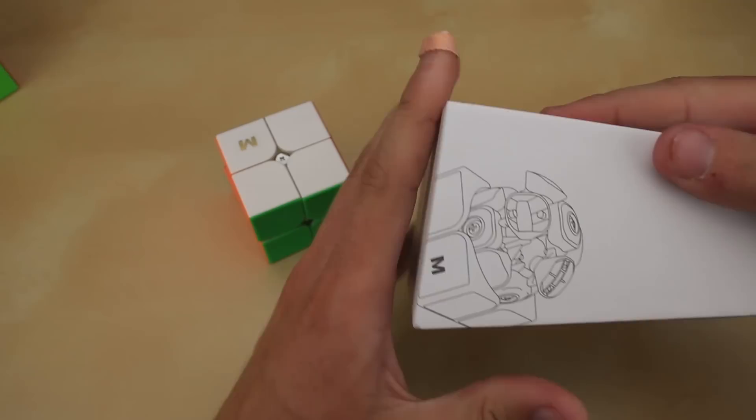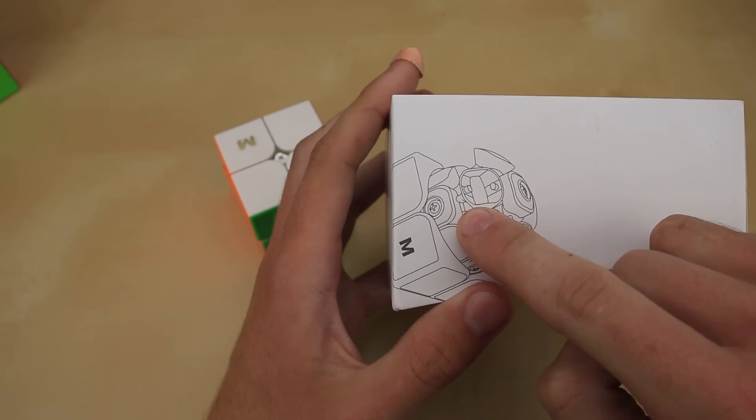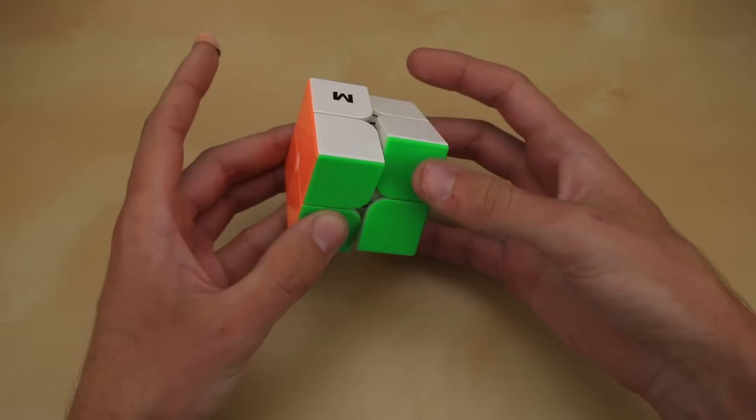Whereas on the MGC 2x2 you actually have these inner edges attracting to the centers. You can actually see it on the design on their box. The inner edge is attracting to the inner center instead of attracting to the corner or instead of just two corners attracting together.